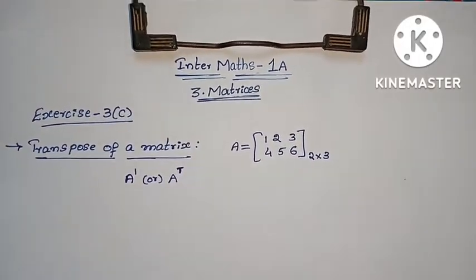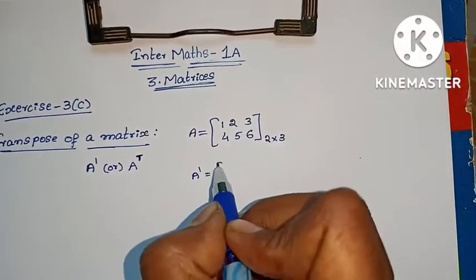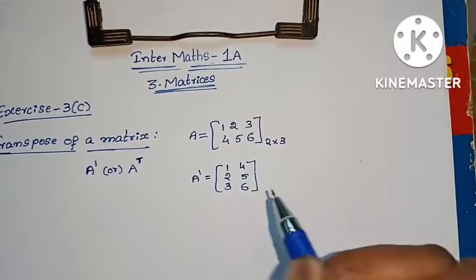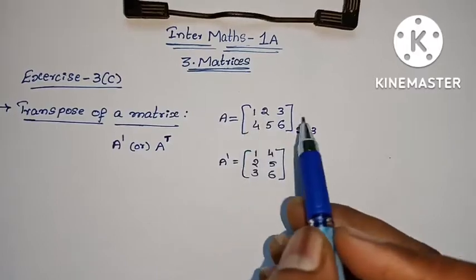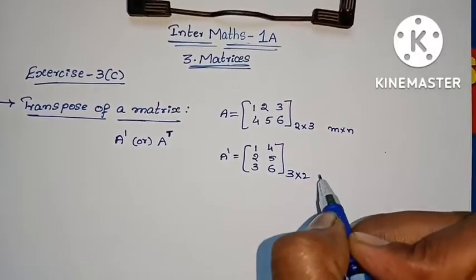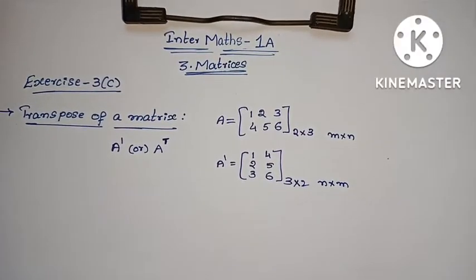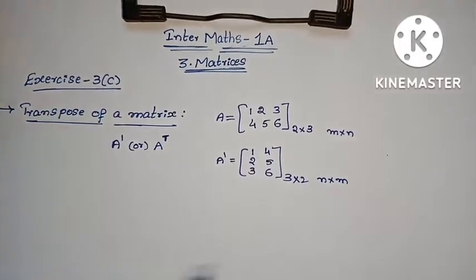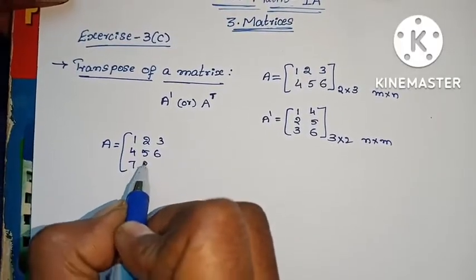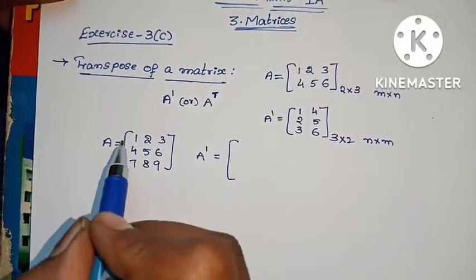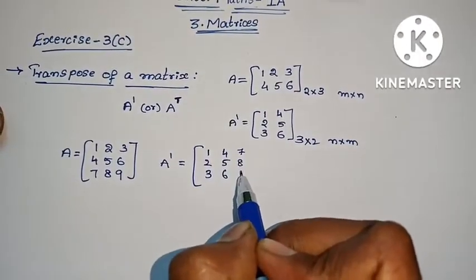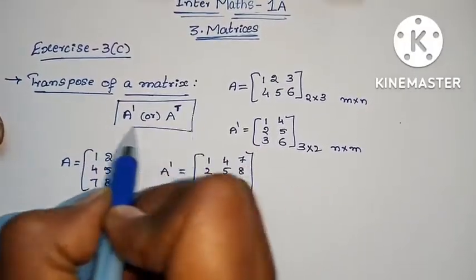Now, A transpose equals A dash. The 1st row becomes the 1st column, 2nd row becomes the 2nd column. The order changes: 2 rows 3 columns becomes 3 rows 2 columns — order m by n becomes n by m. For a 3×3 matrix A equals 1 2 3 4 5 6 7 8 9, the transpose rows become columns.